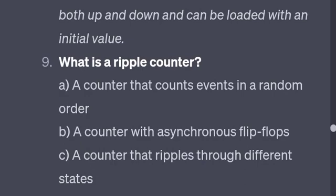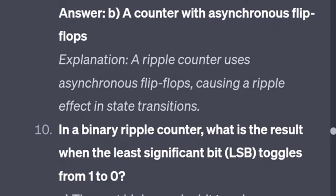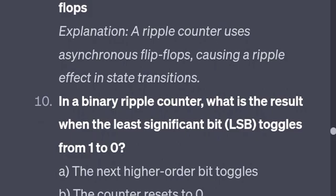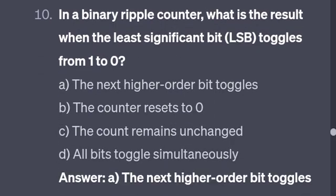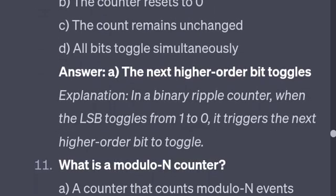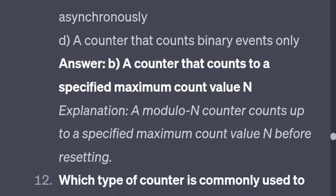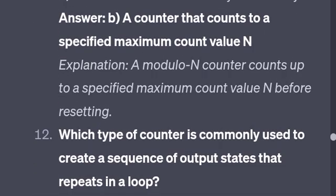What is an up-down counter? What is a Johnson counter? In a binary ripple counter, what is the result when the least significant bit transitions from 1 to 0? What is a modulus N counter? A modulus N counter is a counter that counts up to a specified maximum count value N.